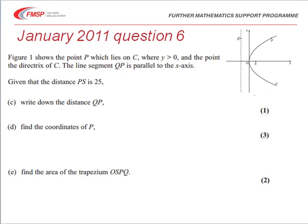In part C of the question, we're told that the focal distance from P to S is 25, and asked to write down the distance from P to the directrix. Well, that's just a statement of fact that QP then is equal to the distance PS, so it's equal to 25.